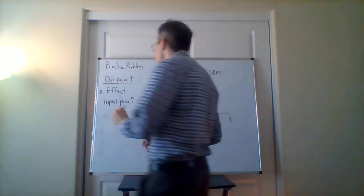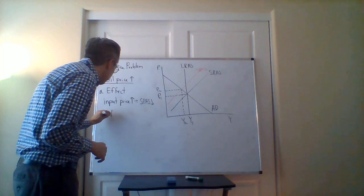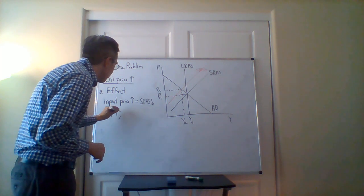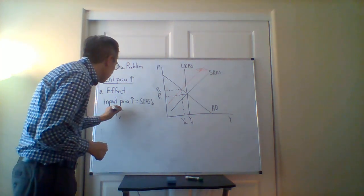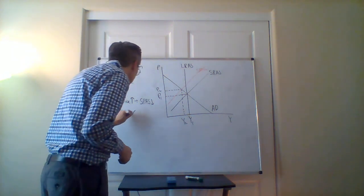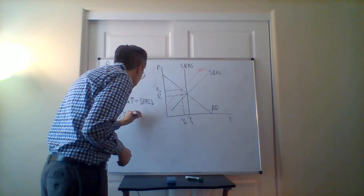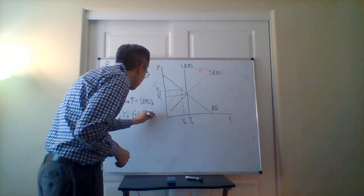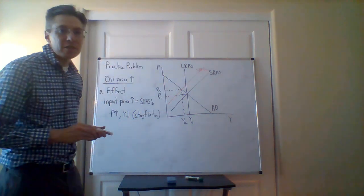We get the price level going up, so it's inflation, but we also get output going down. What this is called - because this is kind of the worst of both worlds here - is stagflation.